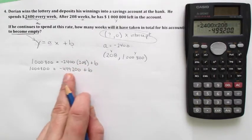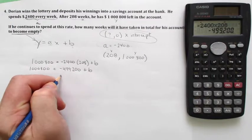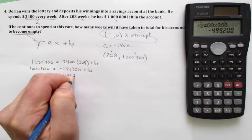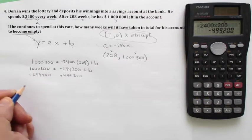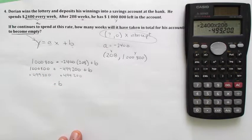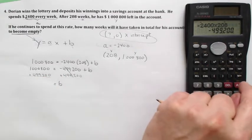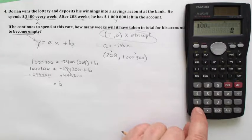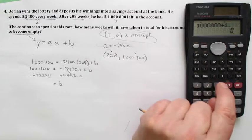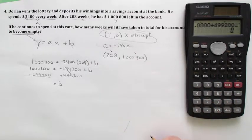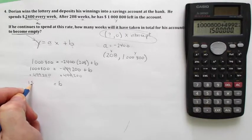So we're now going to isolate the b by adding 499,200 to both sides, and that will tell us our b. It'll go away there and it'll impact this side over here. So 1,000,800 plus 499,200 is equal to $1.5 million, one million five hundred thousand.